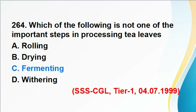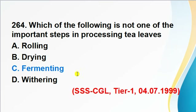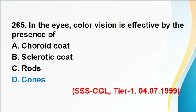Question 264: Which of the following is not an important step in processing tea leaves? Answer C, fermenting, is correct. Tea processing involves three steps: withering, which reduces water content by up to half; drying, which removes leftover moisture; and rolling. There is no fermentation step involved in tea processing.